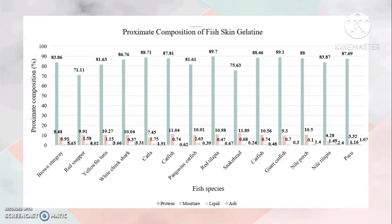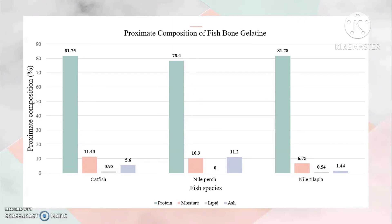For proximate composition of fish skin gelatin, Red Tilapia contained a high protein content of 89.7%. Gelatin extracted from catfish skin had a moisture content of 11.04%, and the highest ash content in fish skin gelatin was obtained from brown stingray. For fish bone gelatin, Nile Tilapia contained high protein content of 81.78%, catfish bone gelatin had a moisture content of 11.43%, and ash content in Nile perch bone gelatin was 11.2%.